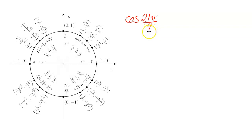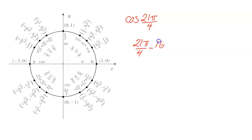If we go 2 revolutions, that would be 16π over 4. So let's take 21π over 4 and subtract 2 revolutions — 16π over 4 — which means this angle is coterminal with 5π over 4.